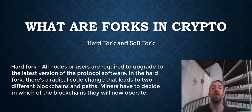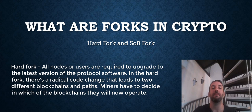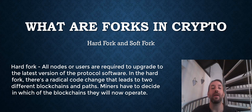In a hard fork, on the other hand, all nodes or users are required to upgrade to the latest version of the protocol software. In the hard fork, there is a radical code change that leads to two different blockchains and paths — one that follows the previous set of rules and one that follows the new ones. Holders of the original coin get coins also in the newly created blockchain, and miners have to decide in which of the blockchains they will now operate.